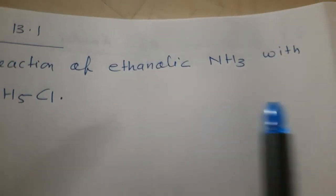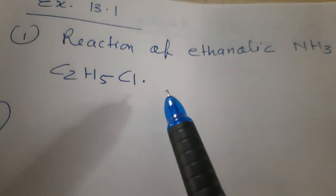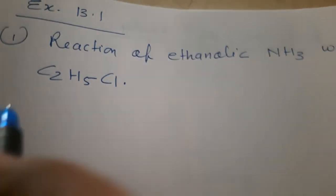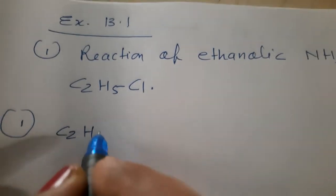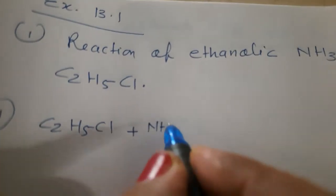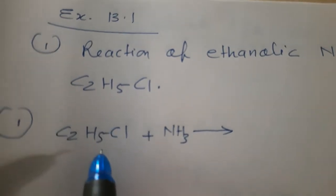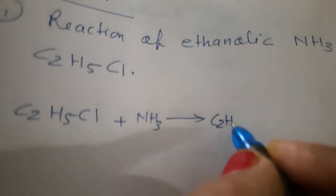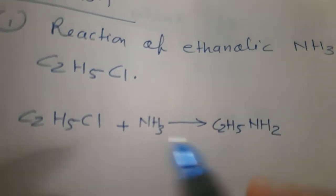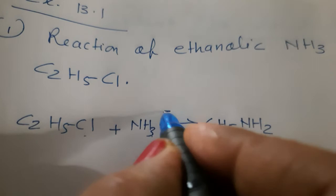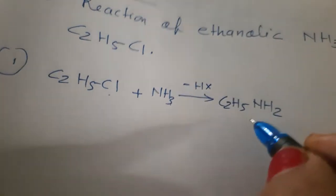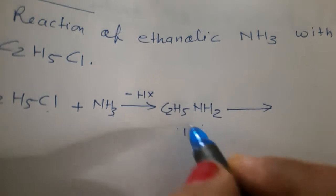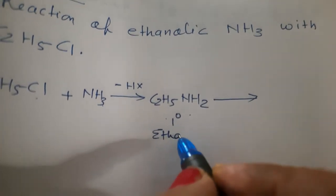Then we will solve the question given in example 13.1. Reaction of ethanolic ammonia with C2H5Cl. So, what will we form? C2H5Cl plus ammonia will give us cleavage because it is a nucleophile. So, cleavage will be formed. C2H5NH2. So, one hydrogen and one Cl will form HX. Then this C2H5NH2, this is one degree amine. What is the name of this amine? Ethane amine. So, one degree ethane amine.